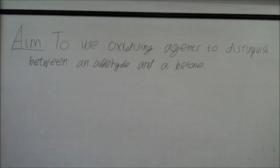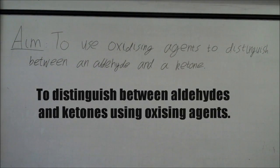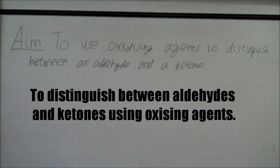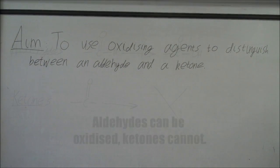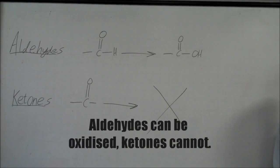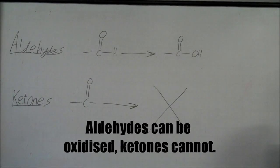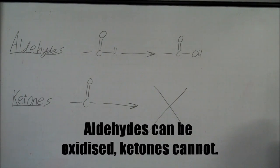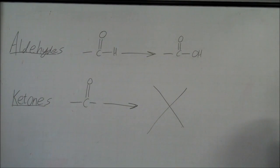The aim of the experiment is to use oxidising agents to distinguish between aldehydes and ketones. Aldehydes can undergo mild oxidation to become carboxylic acids due to their structures. However, ketones cannot undergo mild oxidation.